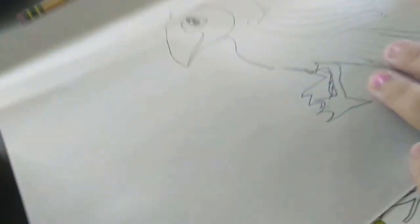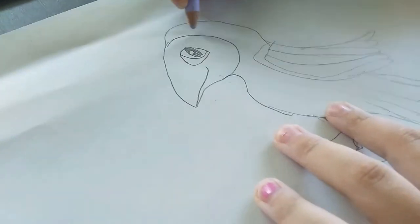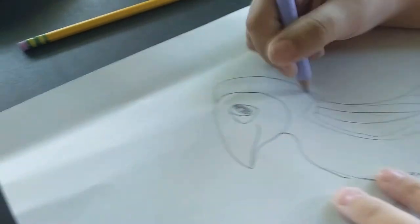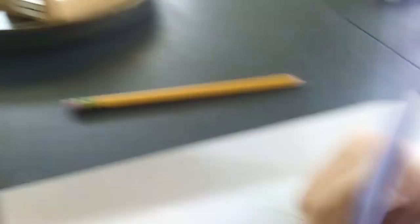So I'm just getting purple so I can color in its feathers, like its white feathers. A very light shade of purple. So it takes very fast.